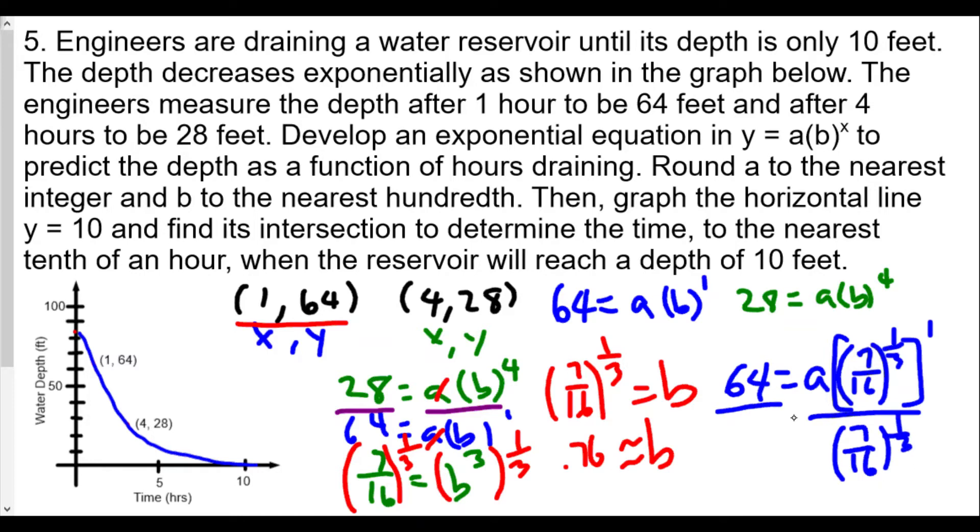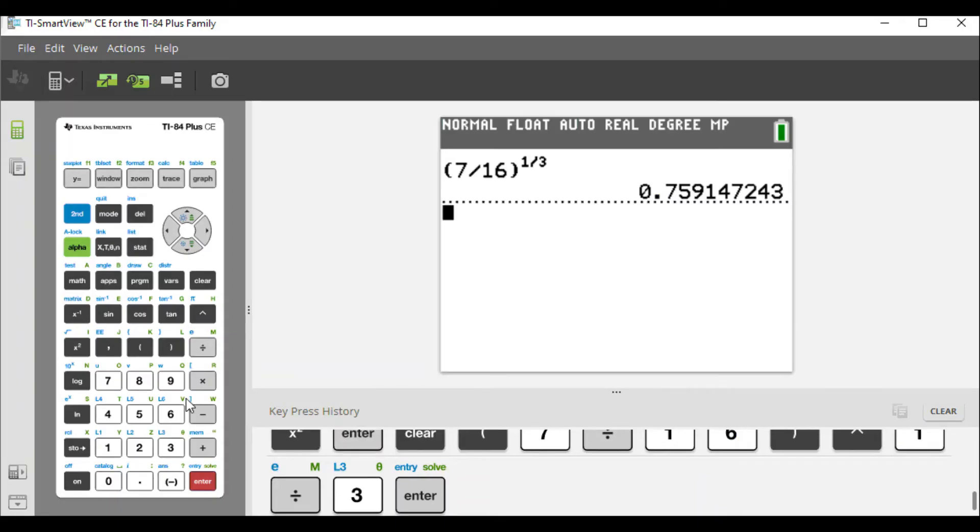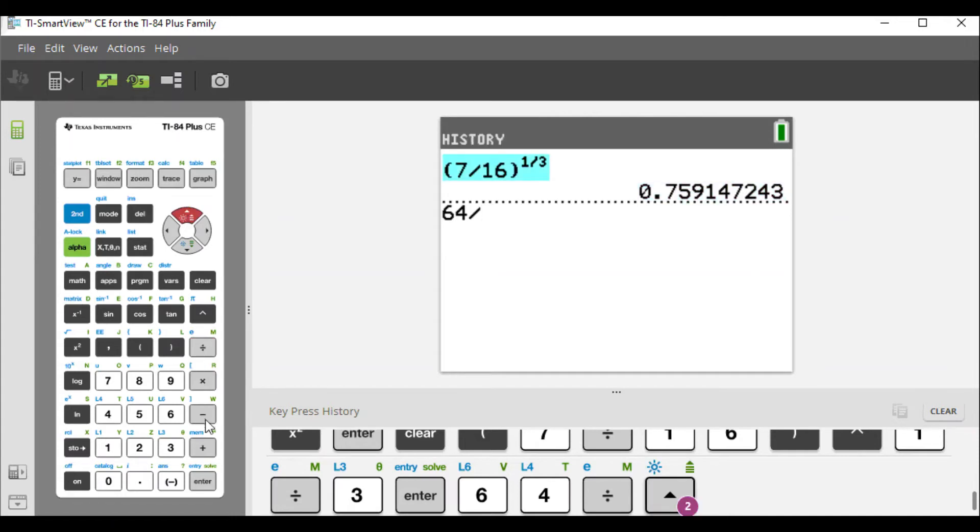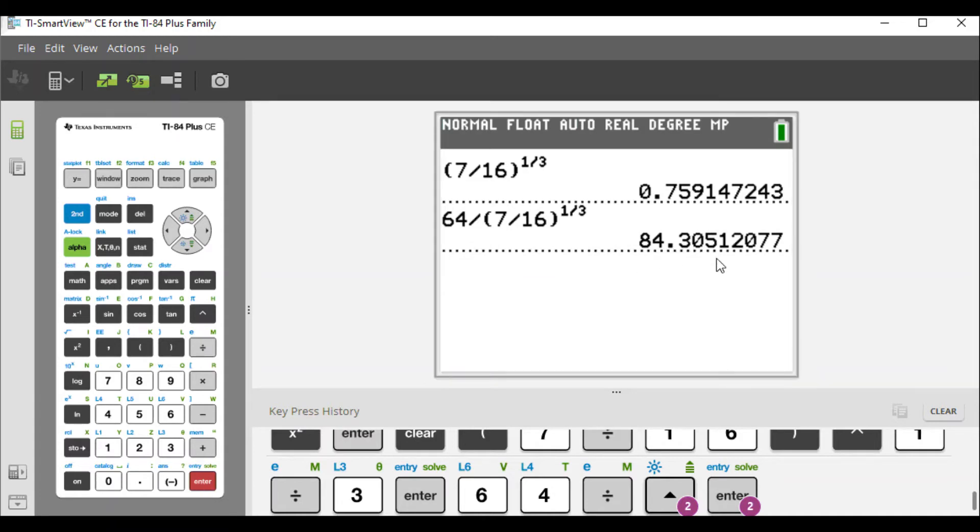We take 64 and divide by this (7/16)^(1/3). So we'll have 64 divided by—and if we don't want to copy down this decimal, we can go straight back to the original (7/16)^(1/3)—and that's what we're doing to find the a value. We get 84.305.